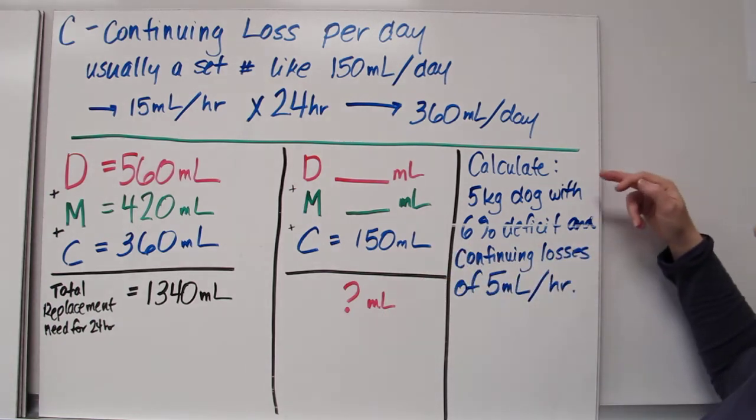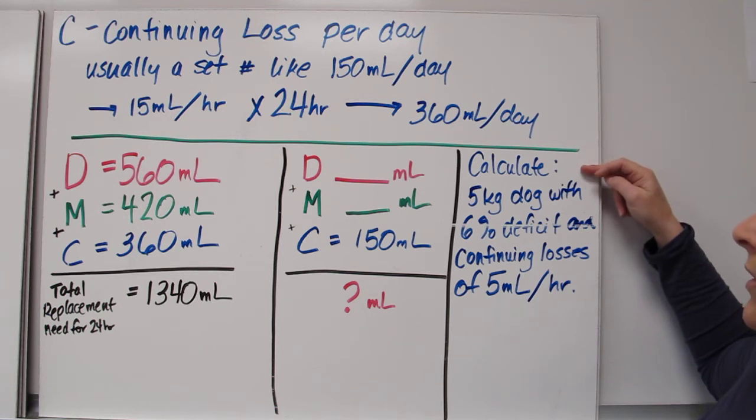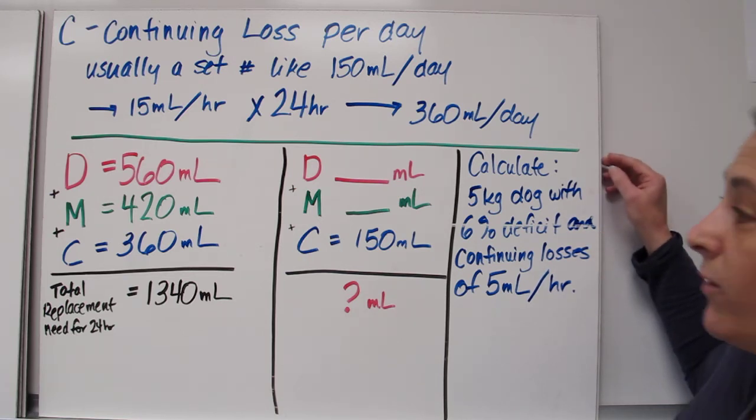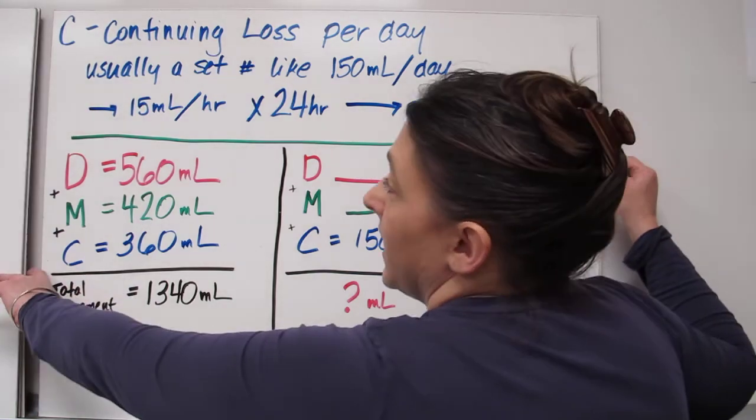Now over here, one more time, just to make sure you guys get this, I want you to calculate out the fluid requirement needed for a 5-kg dog with a 6% deficit and continuing losses of 5 mL per hour. Don't forget to times it by 24.